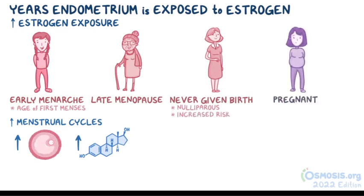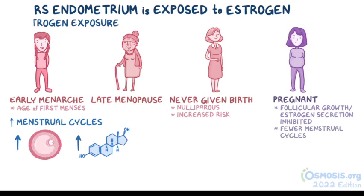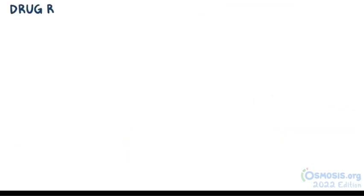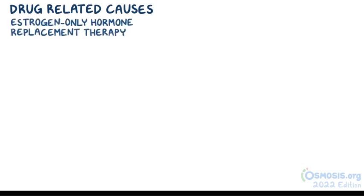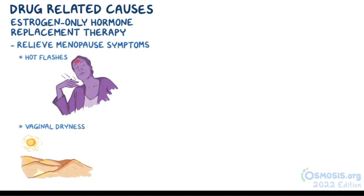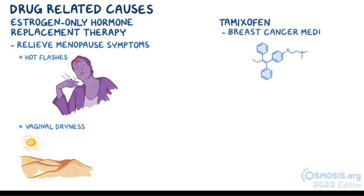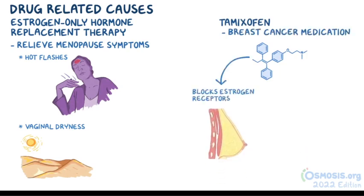Nulliparous females are at higher risk because follicular growth and estrogen secretion are inhibited during pregnancy, meaning those who have been pregnant have fewer menstrual cycles in their lifetime. Drugs can also cause endometrial hyperplasia, such as estrogen-only hormone replacement therapy taken by postmenopausal females to relieve symptoms like hot flashes and vaginal dryness, and tamoxifen, a breast cancer medication that blocks estrogen receptors on the breast but stimulates those on the endometrium.